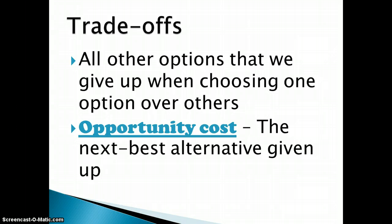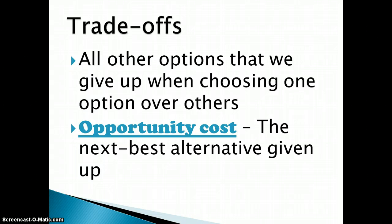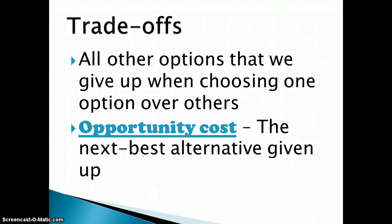Anytime that I choose to do one thing or purchase one good at the expense of another, the next best alternative is what I identify as my opportunity cost. For example, if I choose to study for a test instead of watching television, then the opportunity cost of getting a good grade is the time I could have spent watching TV. Another example: if you're at a restaurant and you'd like two different meals but can only order one, the opportunity cost of the meal you eat is the meal you gave up.